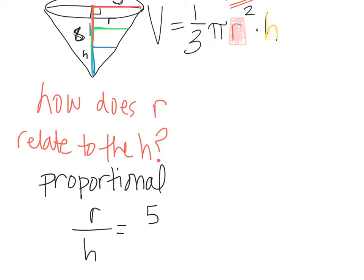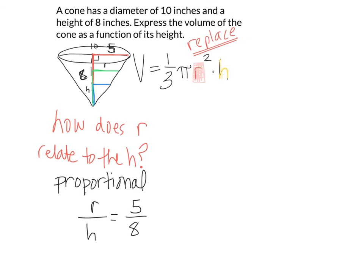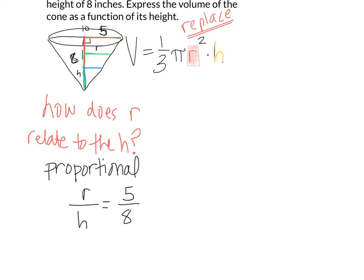Proportions mean equal fractions. If we compare the radius to the height, we can compare the maximum to the maximum. This is the equation that you should always set up when dealing with this type of problem. There is always a proportional relationship between the radius and the height.